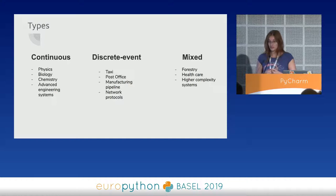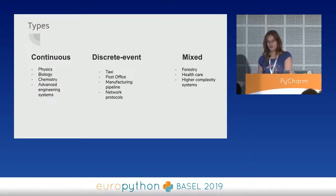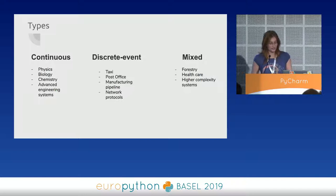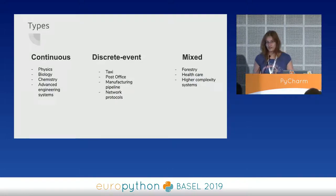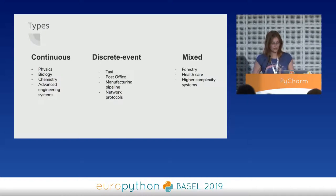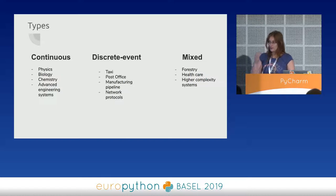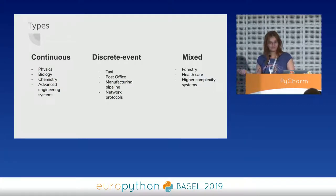A second type is discrete event simulation, which covers most man-made systems — for instance, a post office, where an event occurs and something happens only when a customer is present, or manufacturing pipelines and logistics systems. Right now most production-ready simulation frameworks are mixed, where you can define an event dispatching system and then the system decides how to proceed, with side effects described continuously. Forestry is a good example: a forest grows naturally, but you can dispatch discrete events like man-planted forest or man-created fire.